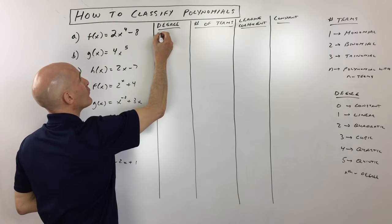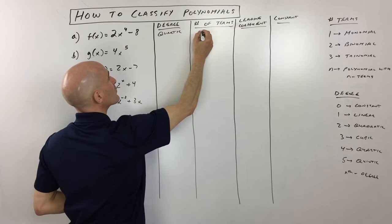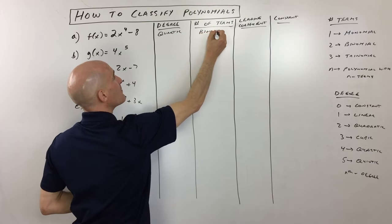Let's just write that down. Four is quartic for the degree. And number of terms will say two, or we could say it's a binomial.